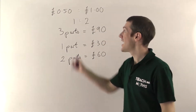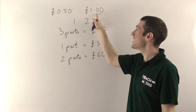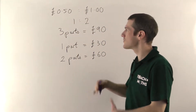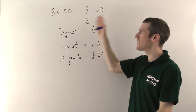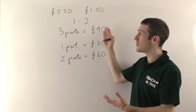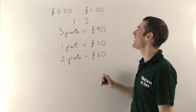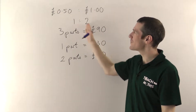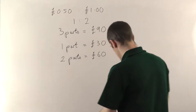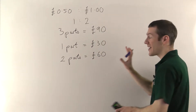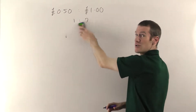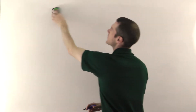It might have rained all day and we could have made no money at all, left with a useless bucket and sponge, and he would have lost twice as much money as me. So to reflect that risk, profits are paid out in the same ratio as the initial investment. The basics: you always want to find out what one part is worth and then use that to find out the value of the other parts.